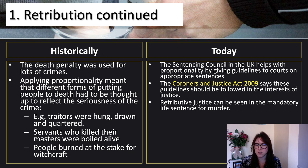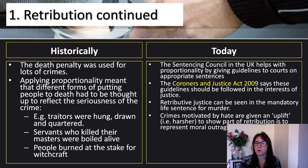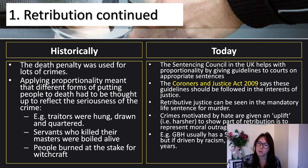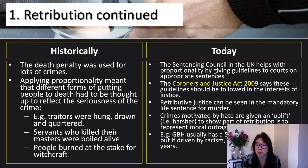We can see retributive justice in the mandatory life sentence for murder. Crimes motivated by hate are given an uplift — harsher punishments — to show that part of retribution is to represent moral outrage. For example, GBH usually carries a five-year prison sentence, but if it's driven by racism it can be raised to seven years. It's GBH plus something like racism, which means the retributive sentence gets higher because of the moral outrage.